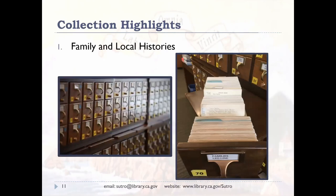One key use of a genealogy collection is to survey what other research on families and communities has been done — to verify, re-examine, or even correct another researcher's conclusions. We have thousands of family histories and local histories providing vital and contextual information. Located near our microfilm cabinets is a surname and locality catalog — card catalogs indexing surnames and locations mentioned in each title in our reading room, arranged alphabetically. Think of it as an index of all indexes. While it only covers holdings up to the 1990s, it's still invaluable and a great place for researchers to start. It's available on microfiche through interlibrary loan.